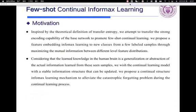Next, we will introduce the motivation of FCIL. Inspired by the transfer entropy, we attempt to transfer the strong encoding capability of the base network to promote Few-Shot Continual Learning. We propose a feature embedding Informax Learning to new classes from a few labeled samples through maximizing the mutual information between different level feature distributions.